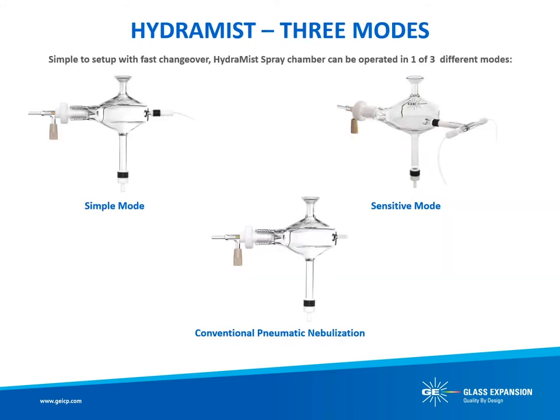The Hydromist spray chamber can be operated in one of three different modes. The simple mode provides simultaneous hydride and pneumatic nebulization with a five-fold improvement in detection limits for hydride-forming elements while maintaining analytical performance for non-hydride elements. With the addition of an extra sample input and T-piece, the Hydromist provides a sensitive simultaneous cold vapor and pneumatic nebulization mode with more than ten-fold improvements in detection limits for cold vapor elements without compromising performance of non-hydride-forming elements. Finally, it can be used as a conventional cyclonic spray chamber with pneumatic nebulization.